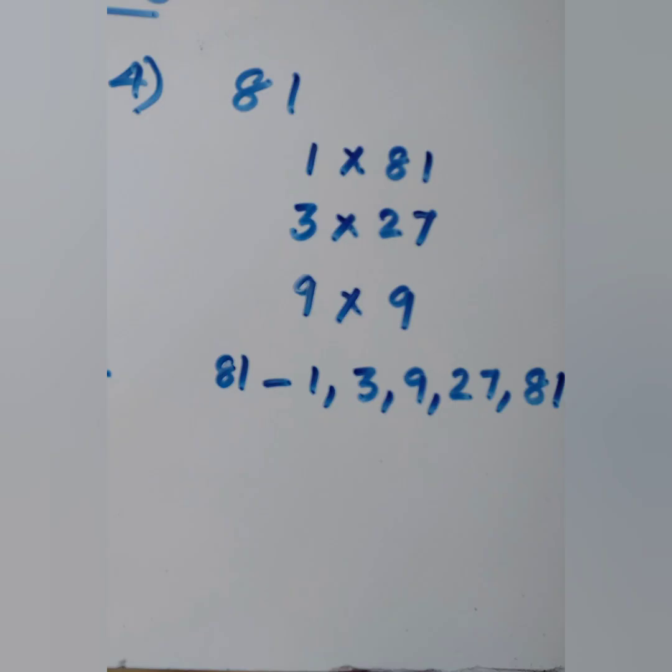Our next number is 81: 1 into 81, 3 into 27, 9 into 9. All these numbers divide 81 exactly. So, the factors are 1, 3, 9, 27 and 81.